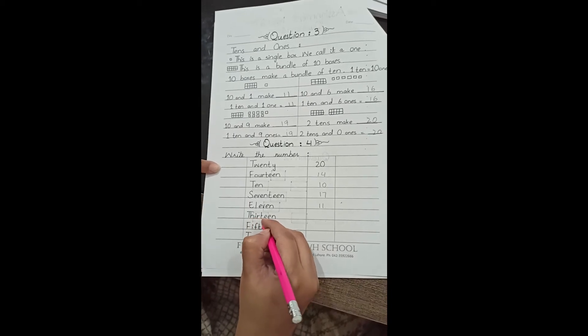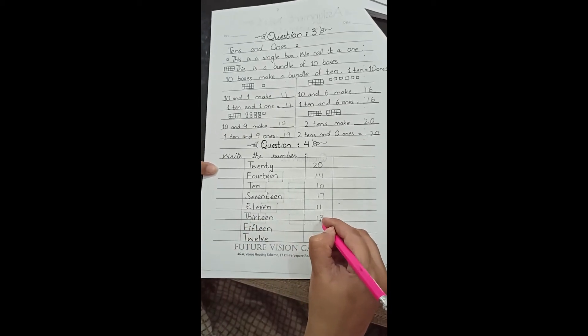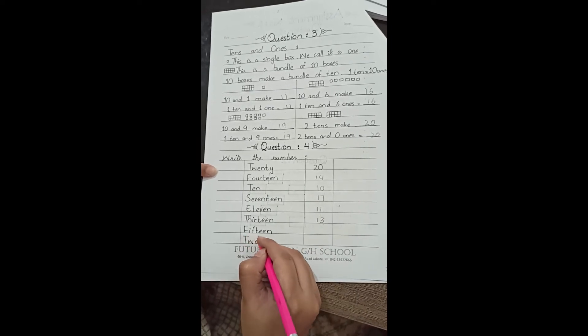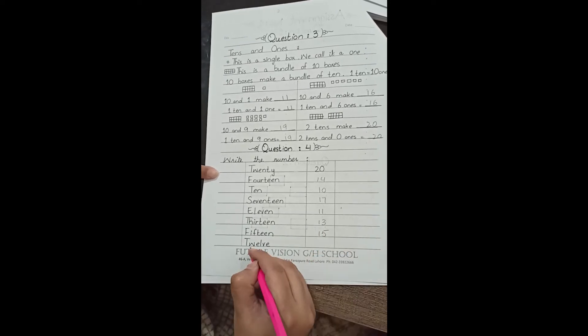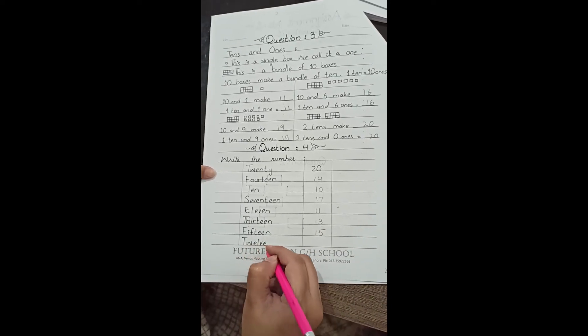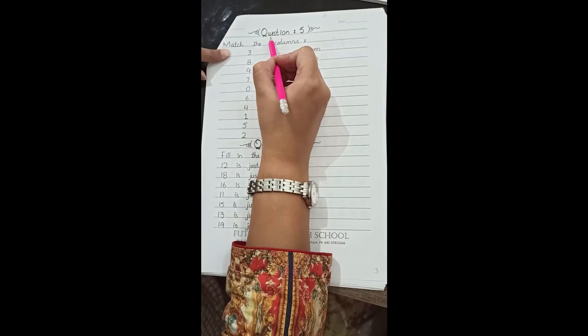Thirteen: 1 and 3, 13. Fifteen: 1 and 5, 15. Twelve: 1 and 2, 12. Question number 5.